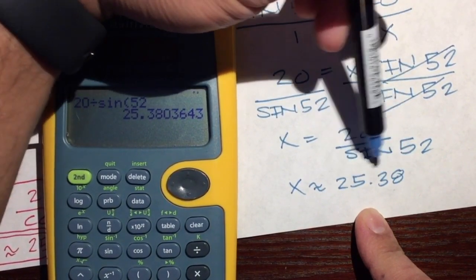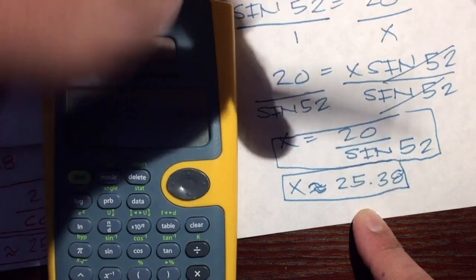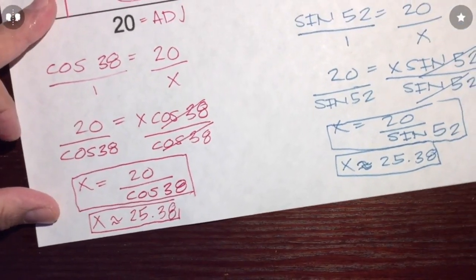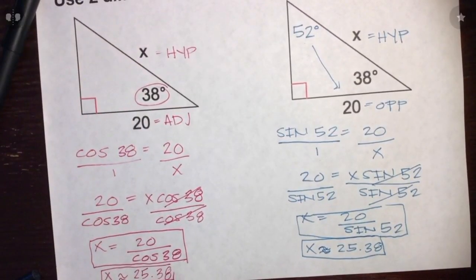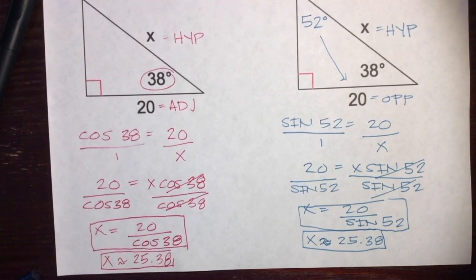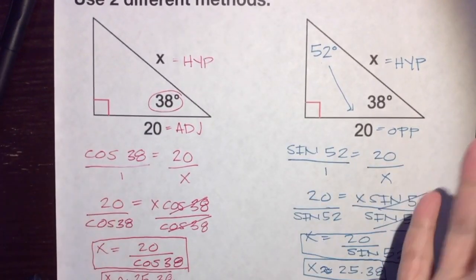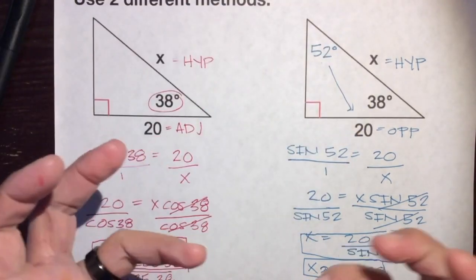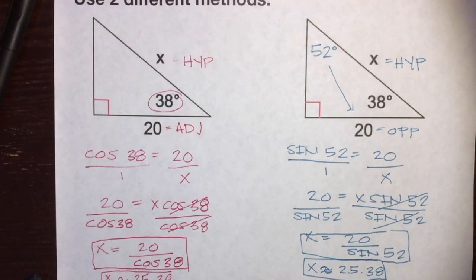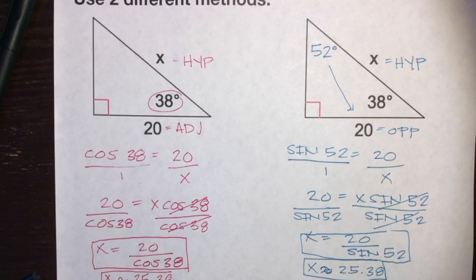x is about 25.38 units — the exact same answer using two different methods. So find that third angle for your second method, cross multiply, and you'll have gotten the same answer twice. Getting it twice confirms you're correct. That's how you find the missing side using two different methods — using sine and cosine. Use this to get A's and then use it in the future as an architect or engineer. Have a great day!